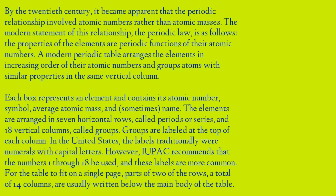Each box in the periodic table represents an element and contains its atomic number, symbol, average atomic mass, and sometimes name. The elements are arranged in seven horizontal rows called periods or series, and 18 vertical columns called groups. Groups are labeled at the top of each column. In the United States the labels were traditionally numerals with capital letters; however, IUPAC recommends that the numbers 1 through 18 be used. To fit on a single page, parts of two of the rows — a total of 14 columns — are usually written below the main body of the table.